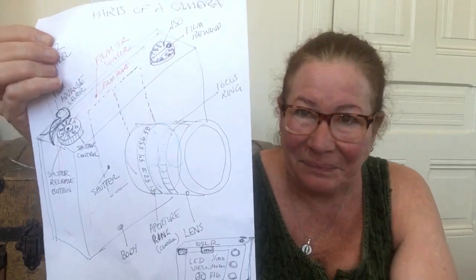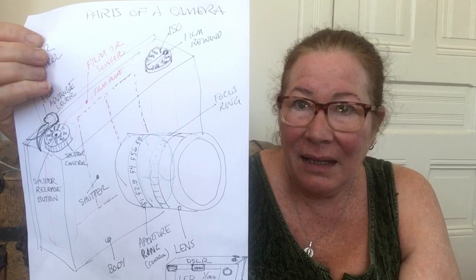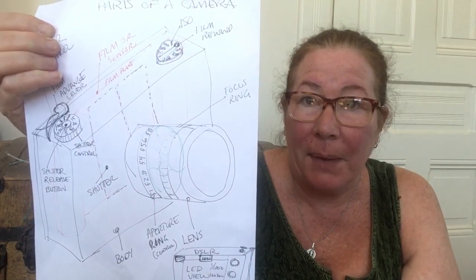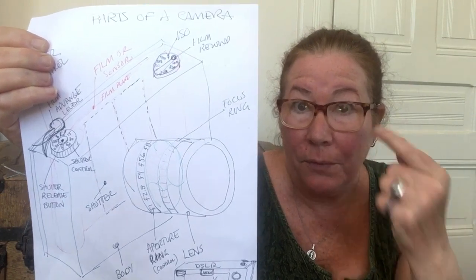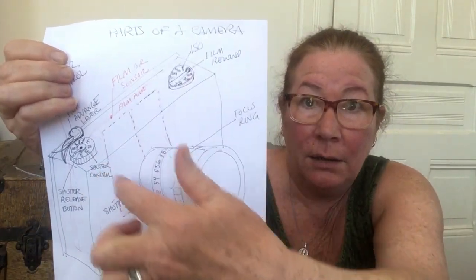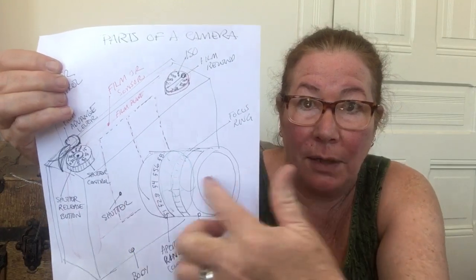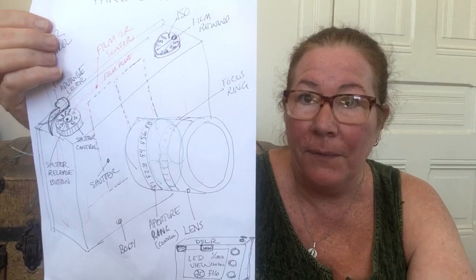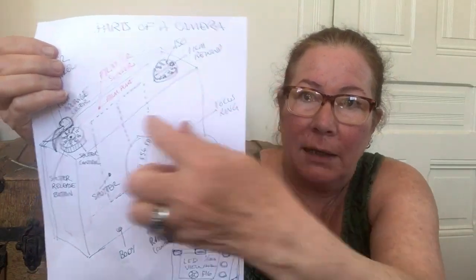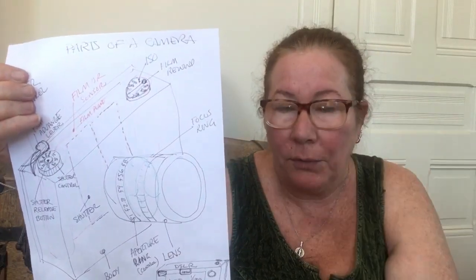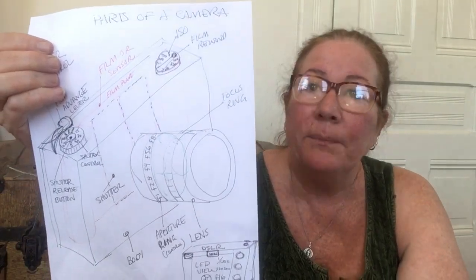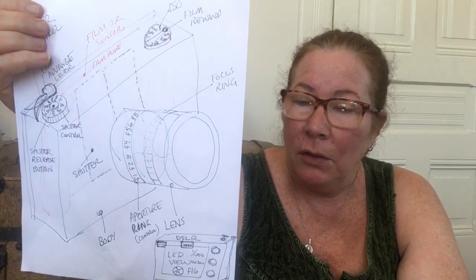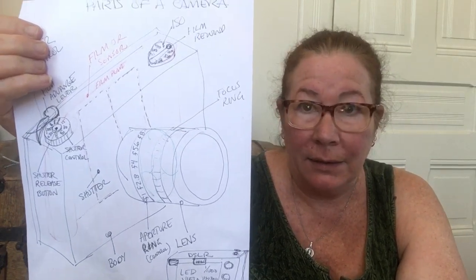On these types of cameras you would also have an eyepiece in the back that you would look through to see what is coming through the lens — what your subject is, what you're taking a photograph of. On the back you'd have a little eye hole that you could peek through to see what you're looking at. Those are the basic parts of the camera so far.